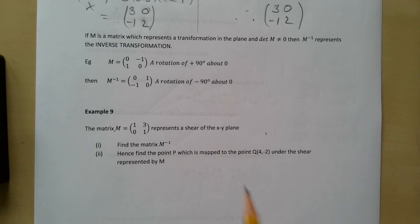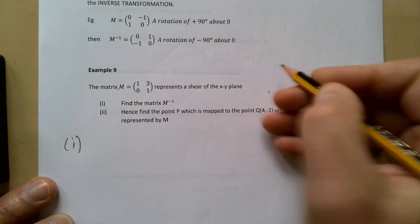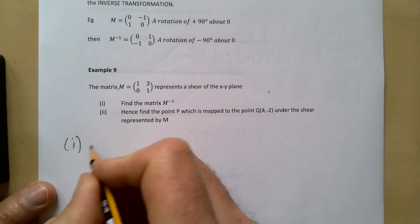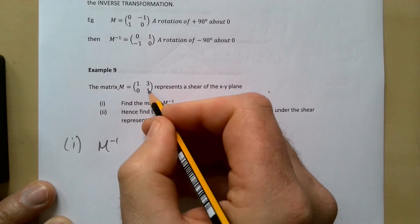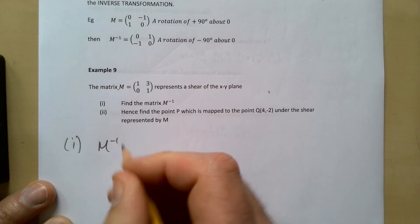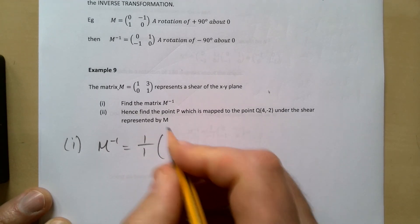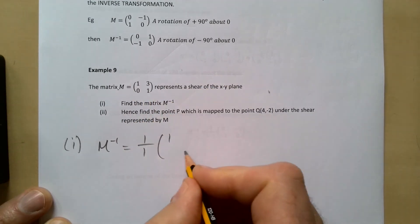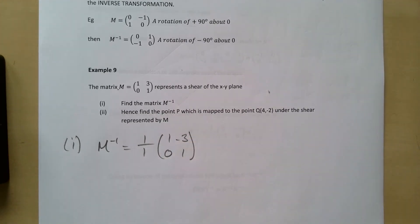So the matrix M is [1 3; 0 1] represents a shear of the xy plane. Find the matrix M to the minus 1. So M to the minus 1: 1 times 1, 3 times 0, so my determinant is just 1. Change these two around and change the sign of these two. So that's my inverse matrix.